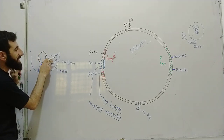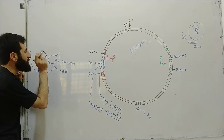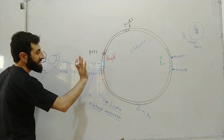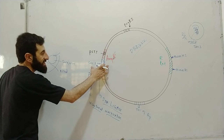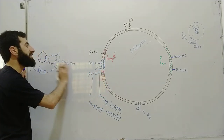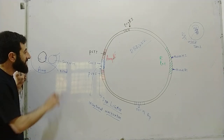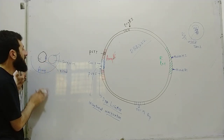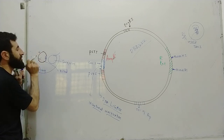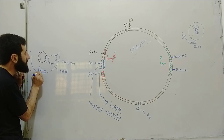If the ampicillin resistance gene is still working, it means there is no insertion — the bacteria just took up plain plasmid. If the gene is inactivated, it means that the DNA was successfully inserted — that is the function of the selectable marker to identify recombinant bacteria.